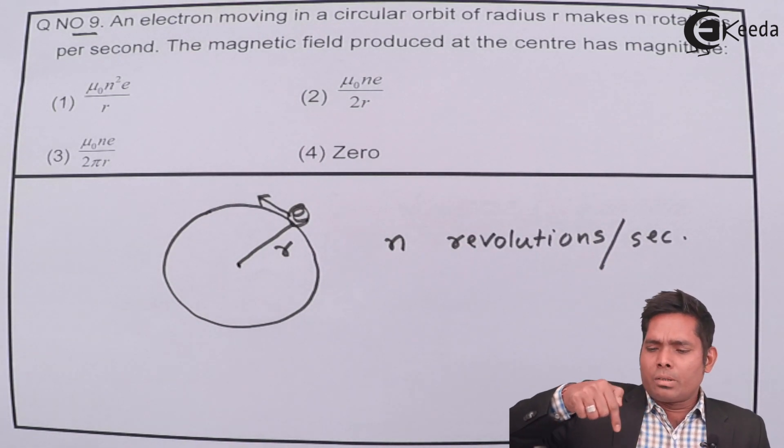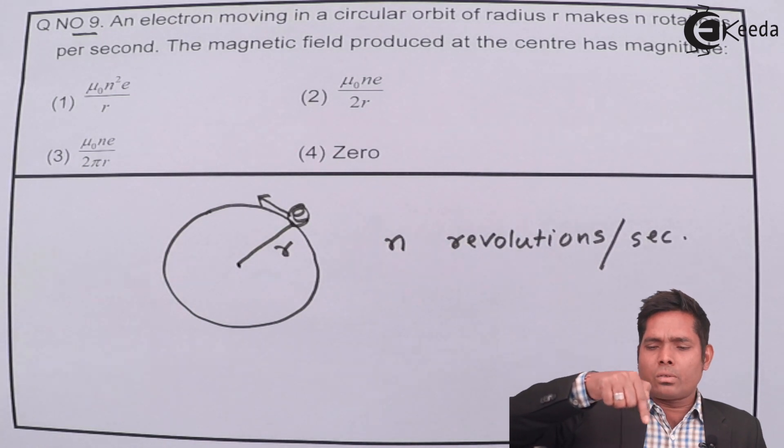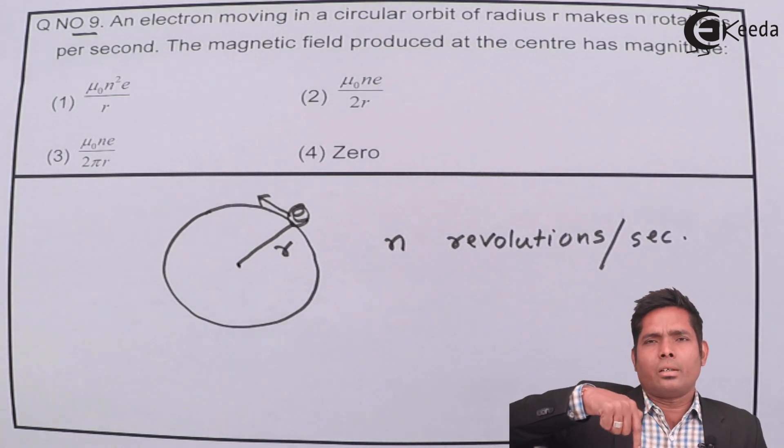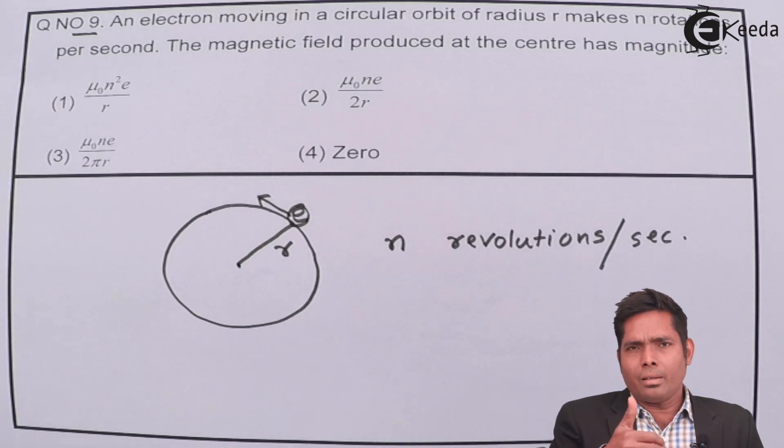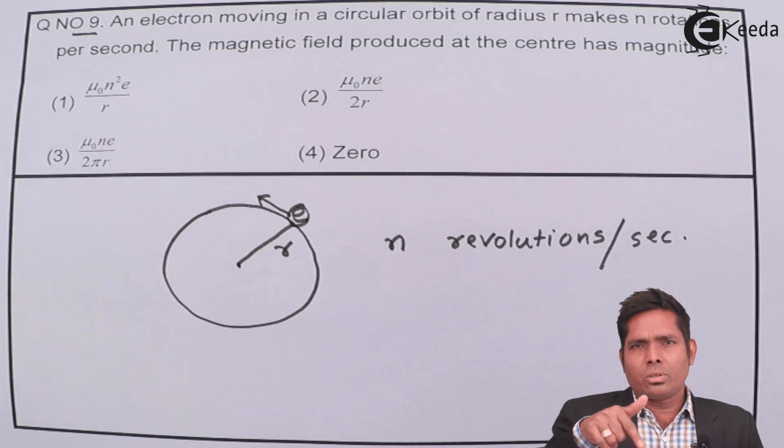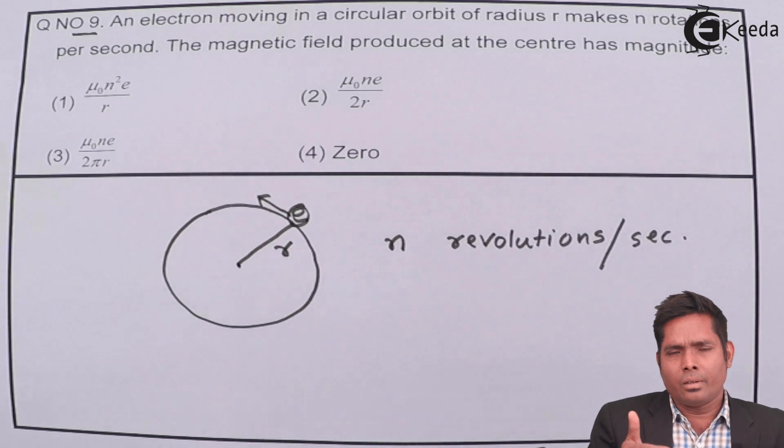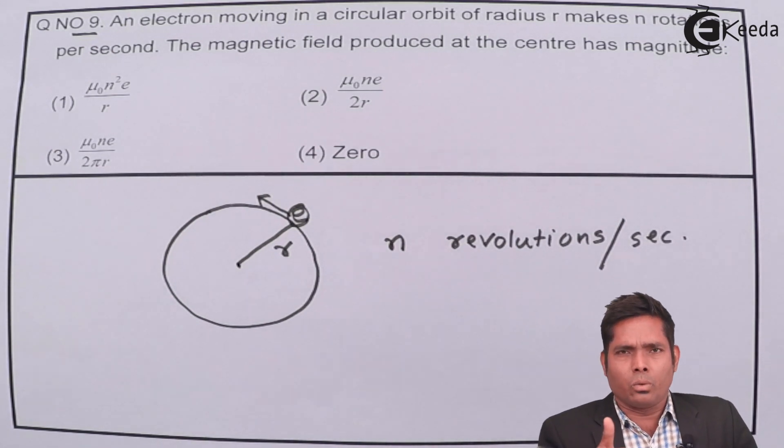If electron is moving, revolving in a circular orbit, then it is talking about a circle. If I have a circle coil and current flows, then magnetic field can be obtained by right hand thumb rule.